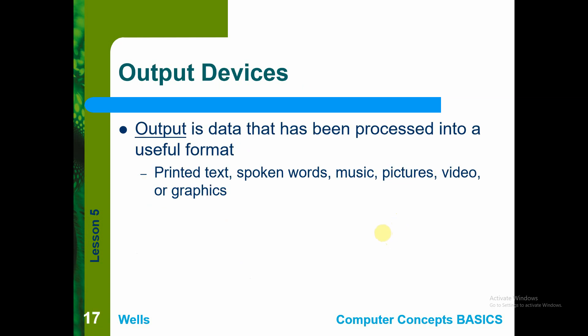Now for output devices. The basic definition: output is data that is processed into useful information. Examples include printed text from printers, spoken words from speakers, music, pictures on your screen, video output from a camera, and graphics. These are examples of output data produced from your output devices.